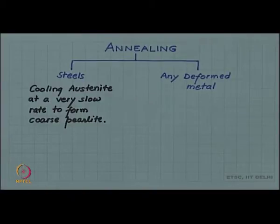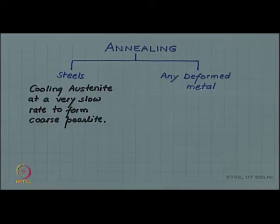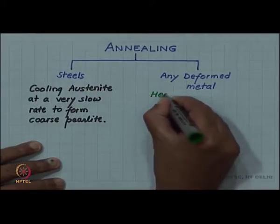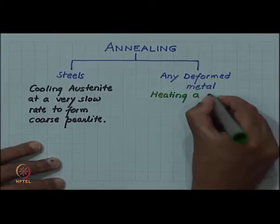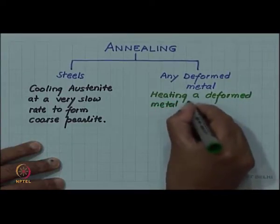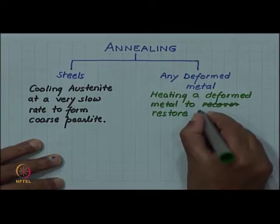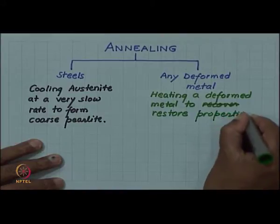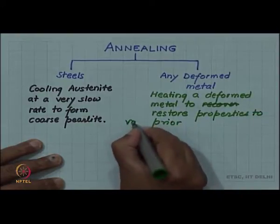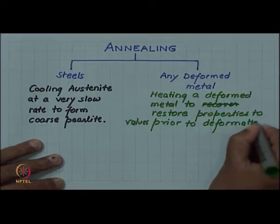But there is another sense in which annealing is used in materials engineering, and that is applicable to deformed metals. In this case, it involves heating a deformed metal to restore properties to values prior to deformation.